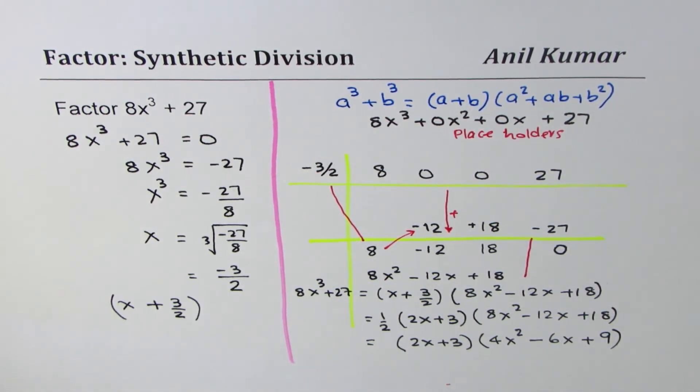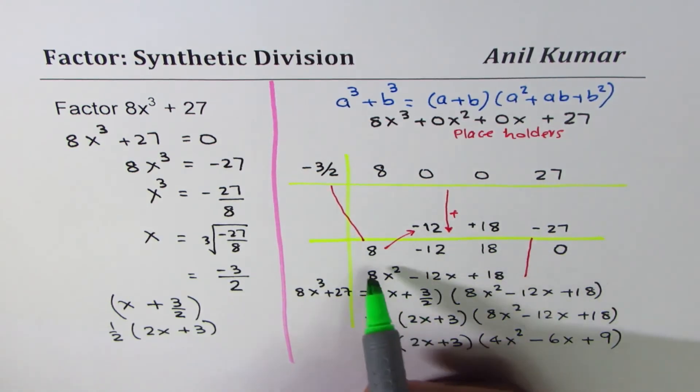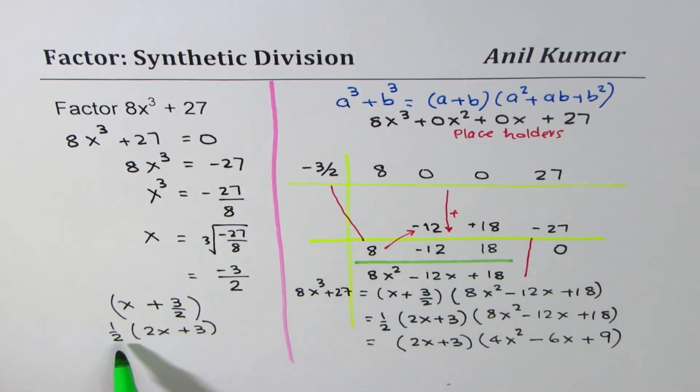The key here to understand is we are actually dividing by the factor x + 3/2, which could be treated as half of 2x + 3. That means the quotient which we got earlier should have been divided by 2 to straight away get the answer. So you could treat these 2 as your factors, dividing 2 into the quotient to get the result.